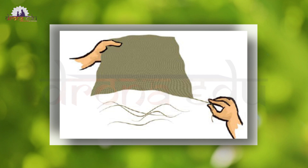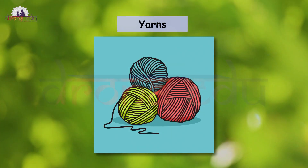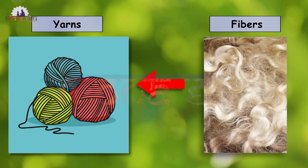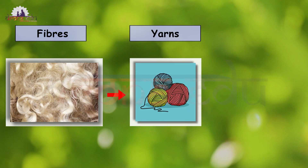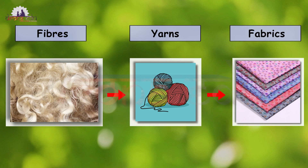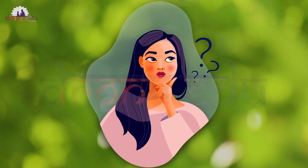Look at this cotton cloth — it has a loose thread at one end. If you go on pulling this thread, you can see many threads coming out of the cloth. Those threads are called yarns. These thin strands of thread are made up of still thinner strands called fibers. Fabrics are made up of yarns, and yarns are further made up of fibers.